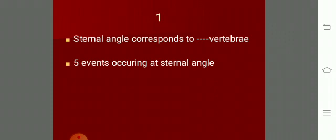At the level of the sternal angle you find a discontinuous dermatome - C4 is just above the sternal angle. Then C5 to T1 will form the brachial plexus to supply the upper limb, and thus just below that you get T2.